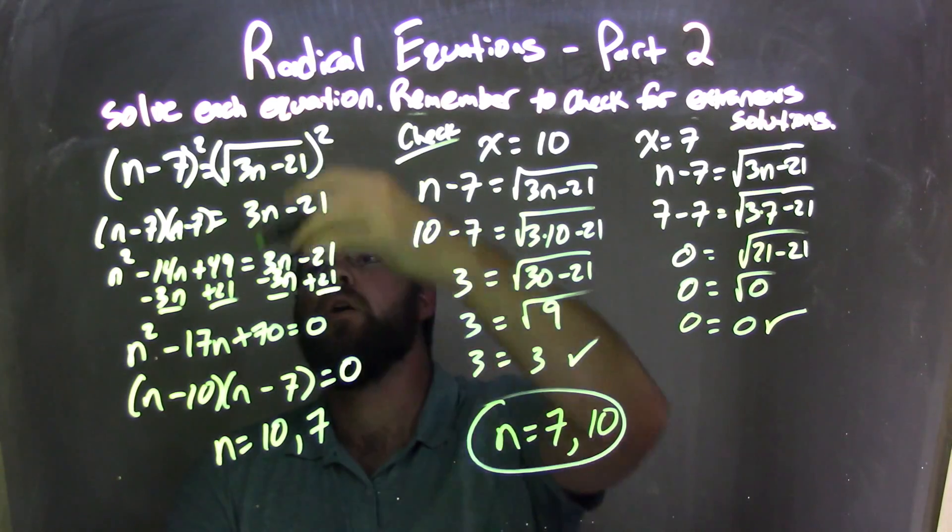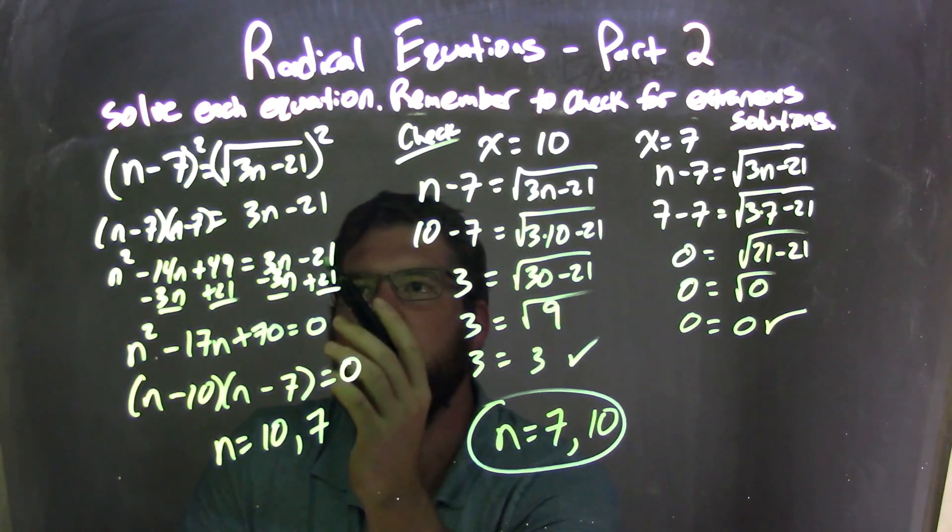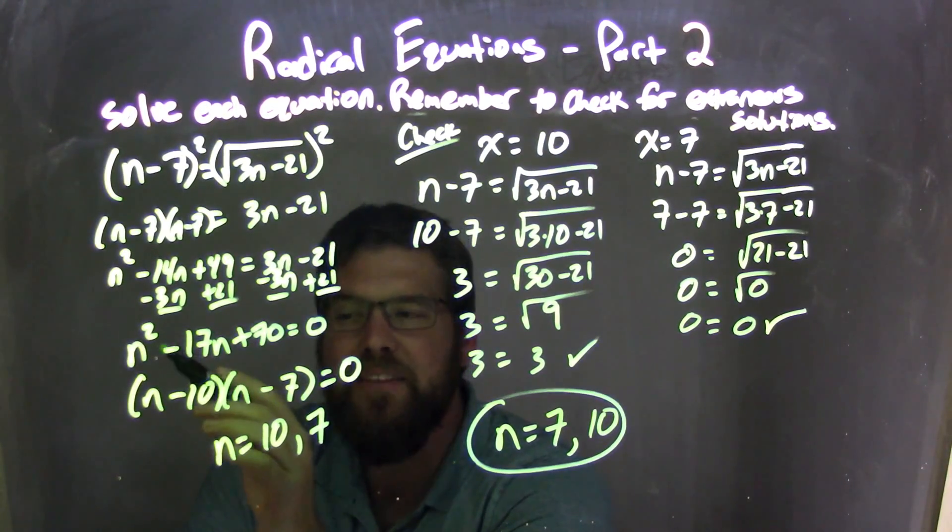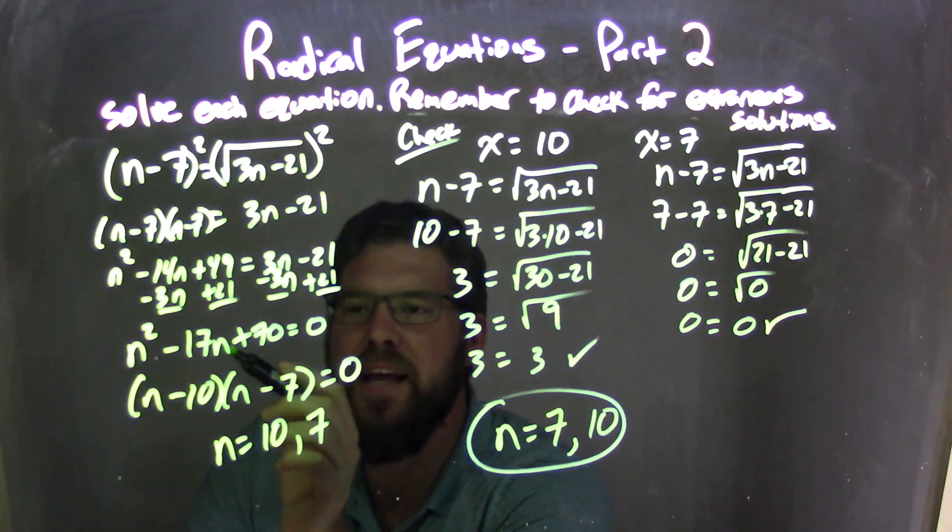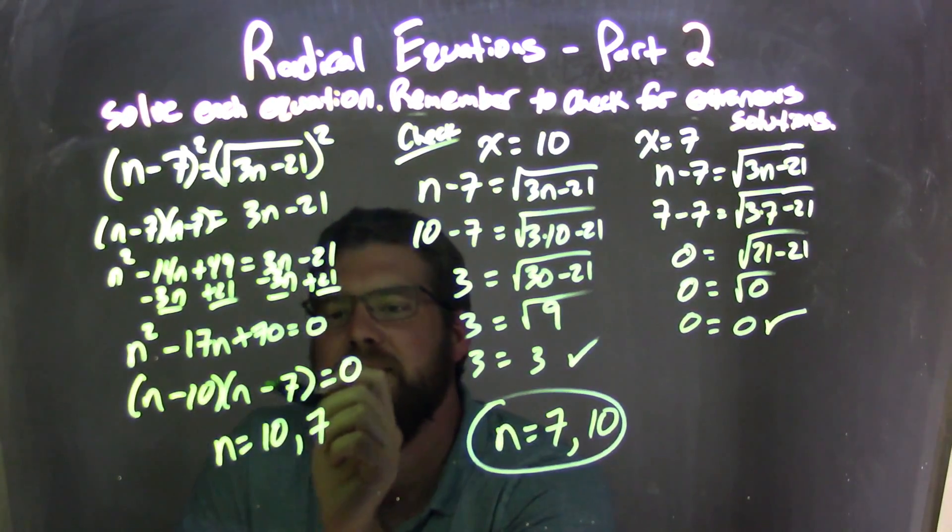We were given n minus 7 equals the square root of 3n minus 21. I squared both sides and brought everything over to the left hand side, leaving me with n squared minus 17n plus 70 equals 0. So factored that out. We got n minus 10 times n minus 7.